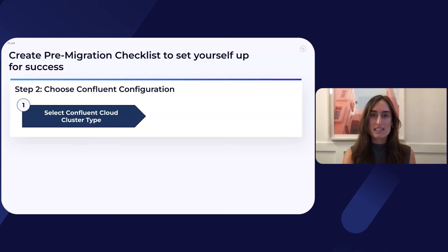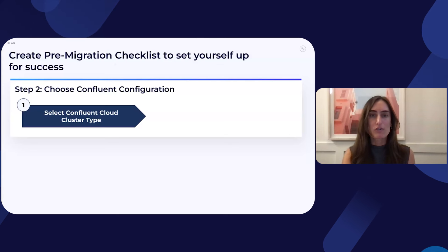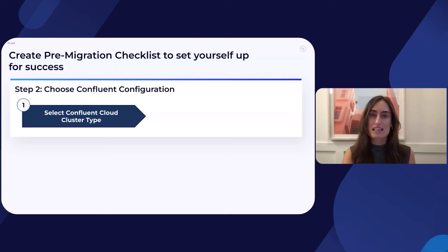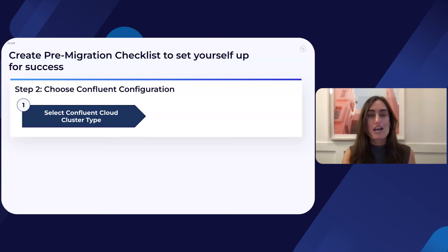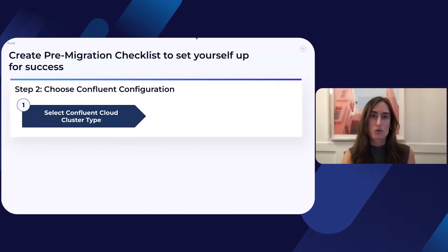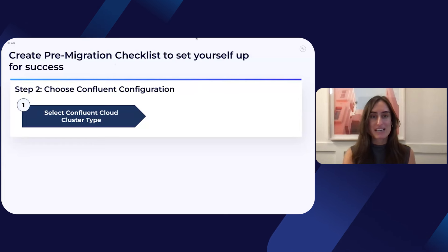To begin, you'll want to select the best Confluent Cloud cluster type for your workloads. When selecting a cluster in Confluent Cloud, there are several different cluster types to choose between. Be sure to consult your existing Kafka cluster assessment and networking connectivity to ensure the cluster type is best suited for your workload. Your Confluent account team is always available to help you choose. Today, we have five cluster types available: Basic, Standard, Enterprise, Freight, and Dedicated.